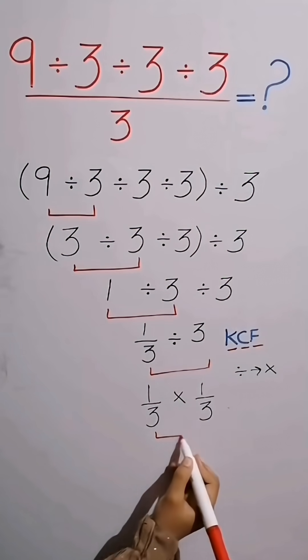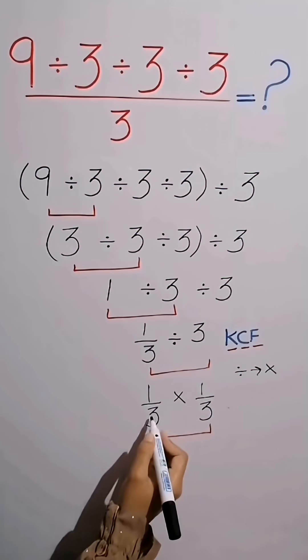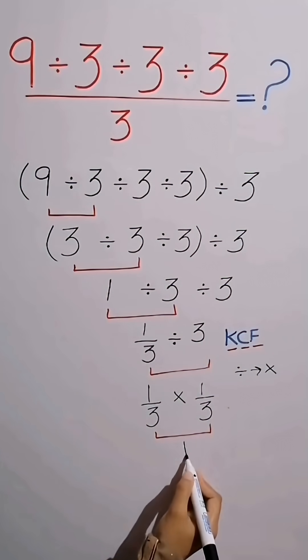Now multiply numerator with numerator and denominator with denominator. 1 times 1 equals 1, 3 times 3 equals 9. We get the final answer.